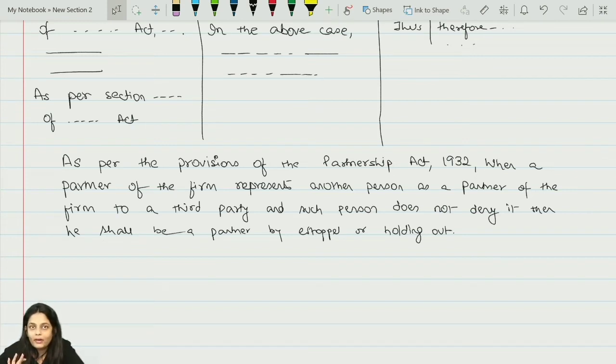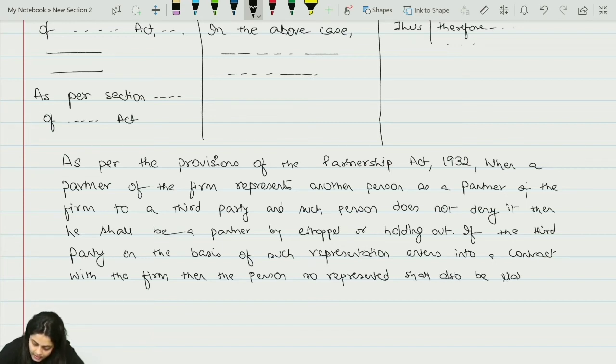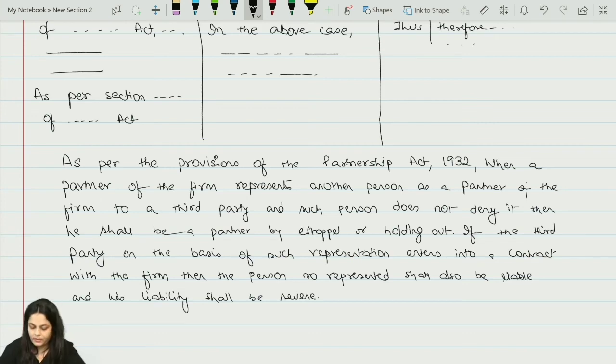This is the definition of partner by estoppel, but I cannot end it here. If the third party on the basis of such representation enters into a contract with the firm, then the person so represented shall also be liable and his liability shall be severe. This is my provision.